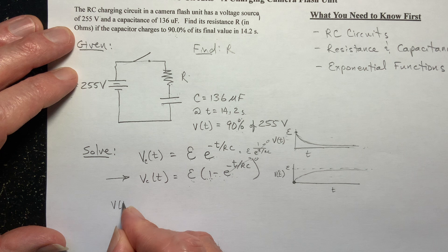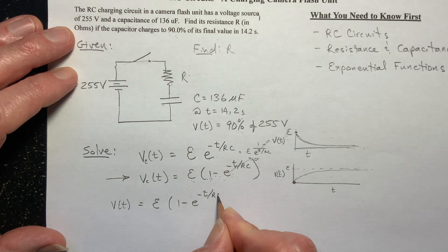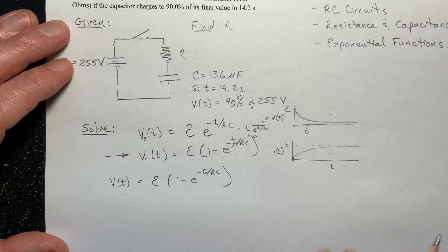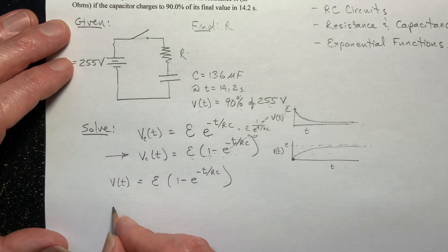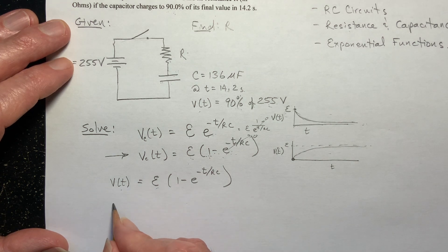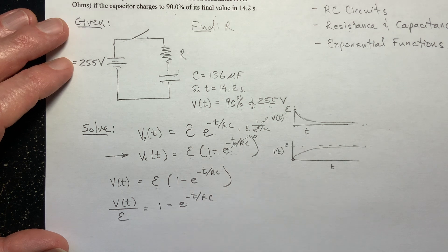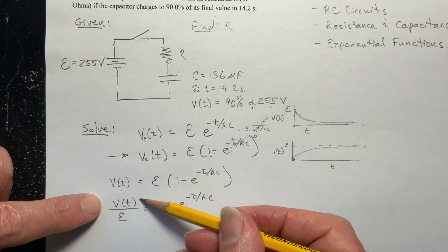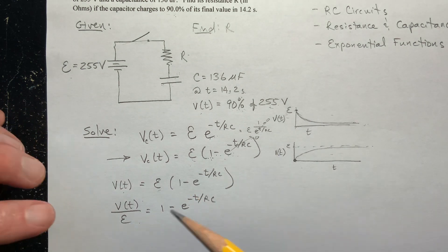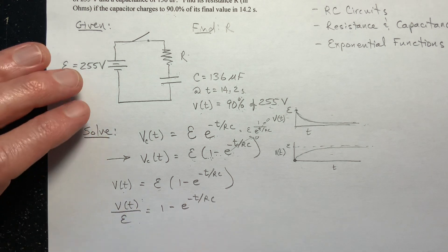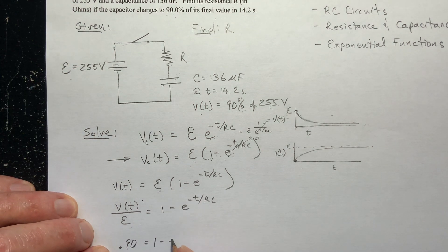So the voltage at some given time T is equal to the maximum voltage times one minus E to the negative T over RC. This is what we're going to do. Now, what did they give us? They said that this is equal to 90% of this. Well, E is this. So if I divide both sides by the EMF of the battery, I get this equation. But what is our voltage at that specific time divided by E? Well, it's 90% of 255. This is 90% of this. So this is 0.9. 0.9 is equal to one minus E to the negative T over RC.